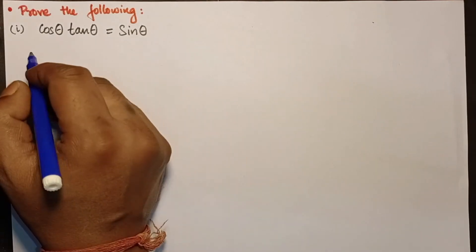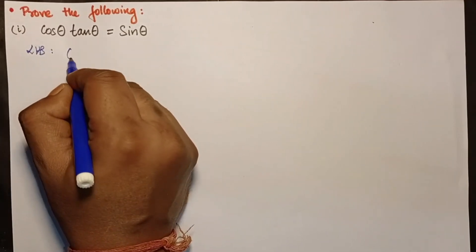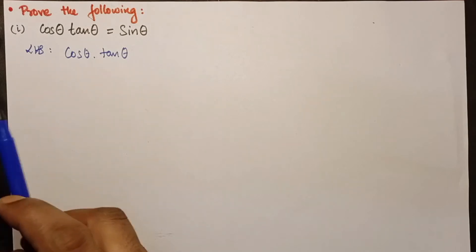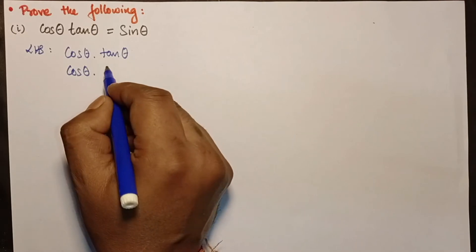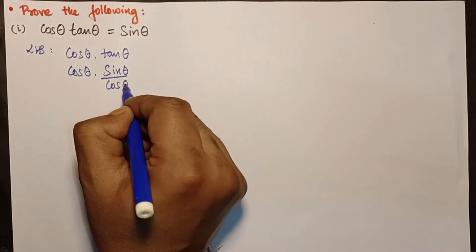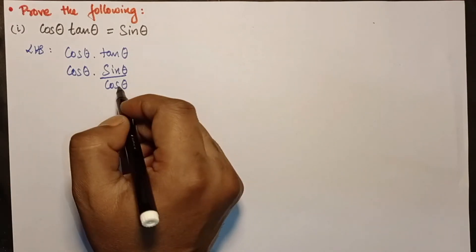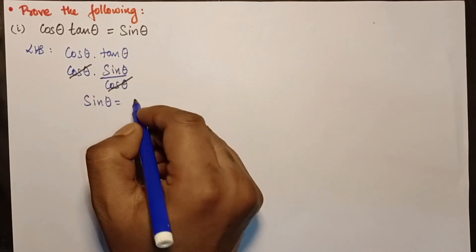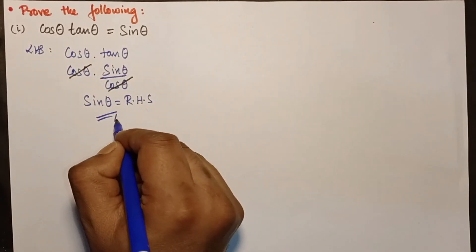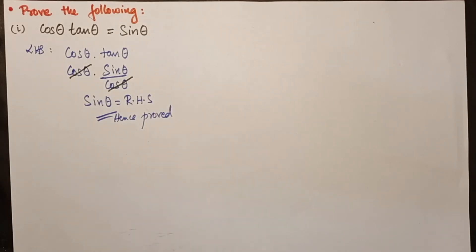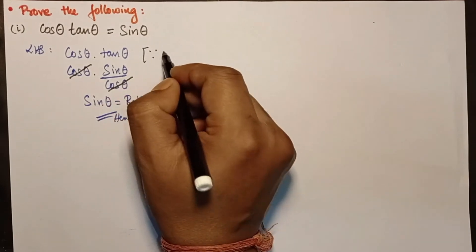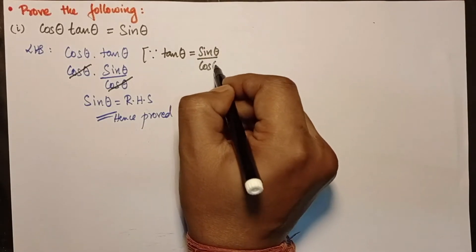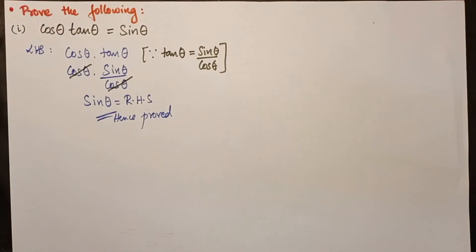Next question: prove that cosθ · tanθ = sinθ. Taking the left-hand side: cosθ · tanθ. Since tanθ = sinθ/cosθ, substituting gives cosθ · (sinθ/cosθ). The cosθ cancels, leaving only sinθ, which equals the right-hand side. Hence proved. Always write the formula at the side — tanθ = sinθ/cosθ.